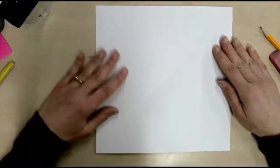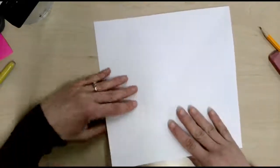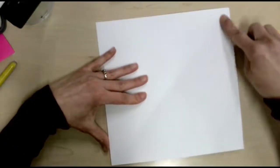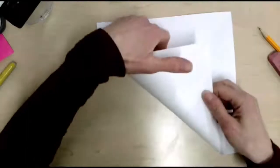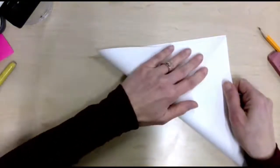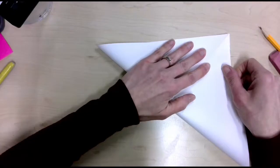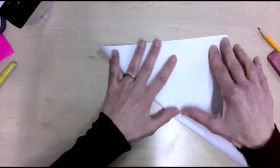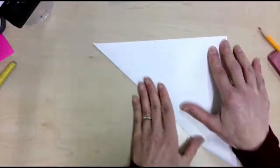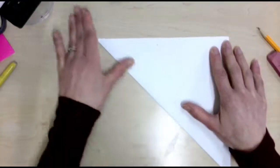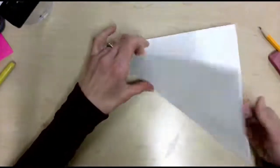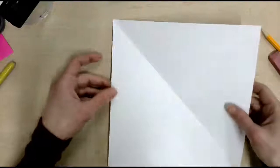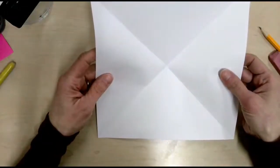This is what you have now. We're going to go ahead and we have one diagonal line. We're going to fold corner to corner to make a second diagonal line that intersects with that. Go ahead and make a second diagonal fold so that you have a big X with your folds.